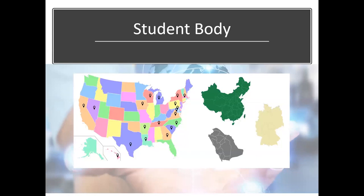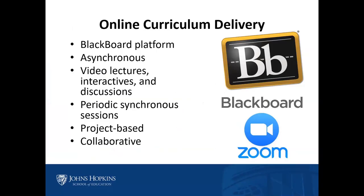Geographically our students come from many different areas. The East Coast of the United States is well represented. We have students from the South and Southeast, in Texas, California, Washington State, and Oregon, as well as a number of students in Hawaii. Internationally we have students in China, Saudi Arabia, South Korea, Pakistan, India, and several other locations. So our students in this program are located all over the world, and I'll talk a little bit about how students make that work collaboratively a bit later on.